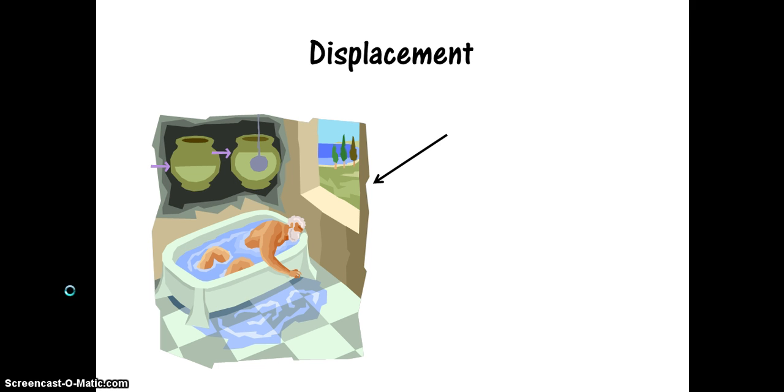Who's this guy? This is Archimedes. And you're probably wondering why there's a picture of Archimedes in his bathtub. So here's the story. Archimedes had a job. He had to figure out the volume of an oddly shaped object. That object was actually a crown.